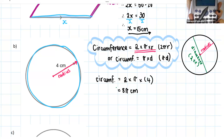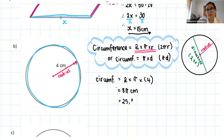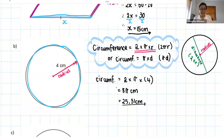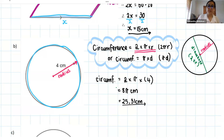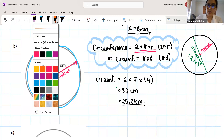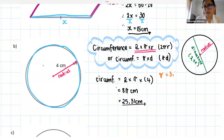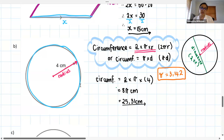Round off to two decimal places — so the circumference is 25.31 centimeters. Generally when working with a circle, we round to two decimal places. If you have a calculator without a pi button, you can use pi as 3.142 — remember that value and type it in manually.